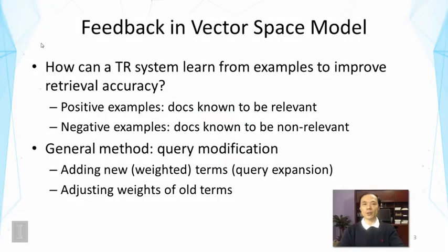As we have discussed before, in the case of feedback, the task of a text retrieval system is to learn from examples to improve retrieval accuracy. We will have positive examples — those are documents assumed or judged to be relevant, or documents viewed by users. We also have negative examples — documents known to be non-relevant, or documents that are skipped by users. The general method in the vector space model for feedback is to modify our query vector to place it in a better position to make it more accurate.